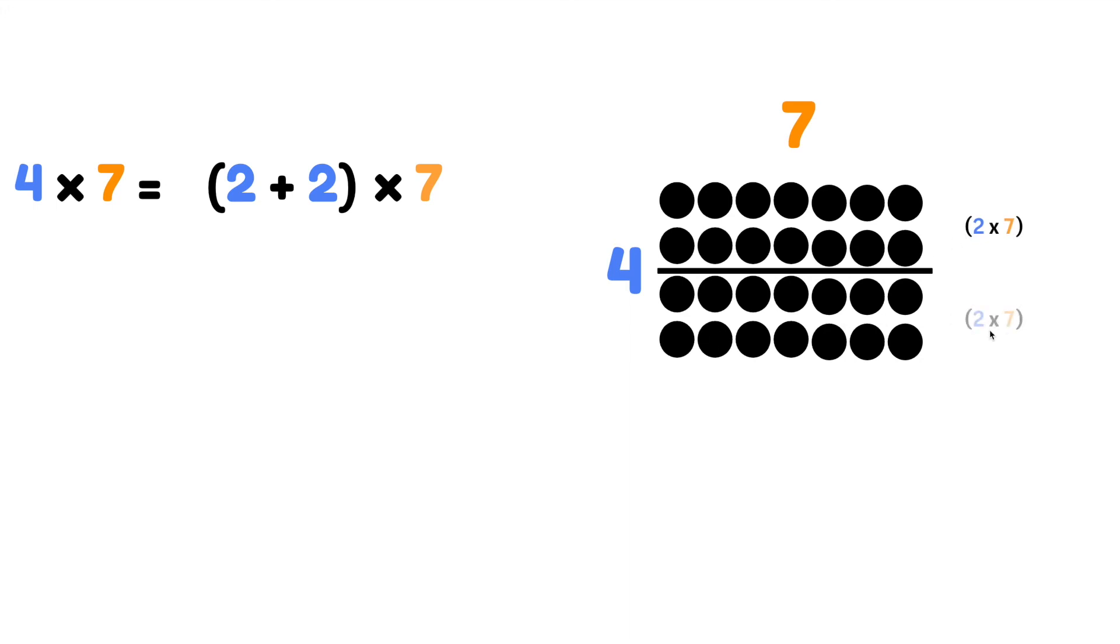Below we have 2 rows of 7. That means we distributed or shared the 7 with the 2 rows on top and we distributed the 7 to the 2 rows below. Again let's look at this array. We have 7 and we distributed it to the 2 rows below and we also distribute the 7 to the 2 rows on top.